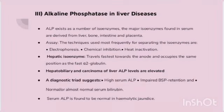Alkaline phosphatase exists as a number of isoenzymes. The major isoenzymes found in serum are derived from liver, bone, intestine, and placenta. The techniques used most frequently for separating the isoenzymes are electrophoresis, chemical inhibition tests, and heat inactivation.